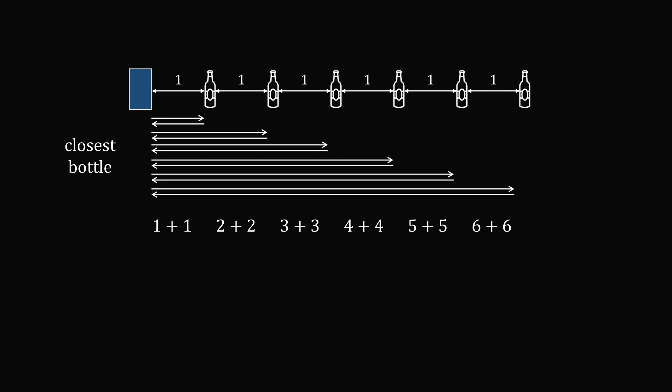So what's the total distance traveled? It will be two times the sum of the integers from one to six. Of course, there's a famous formula to sum the integers going from one to n. We can apply that formula as six times seven over two. This cancels out with the factor of two, and we get this is equal to six times seven, which equals 42 units.